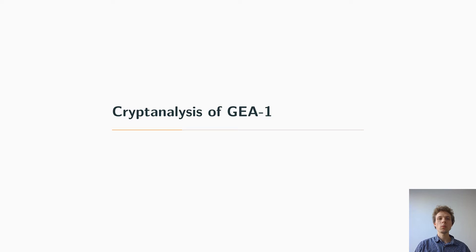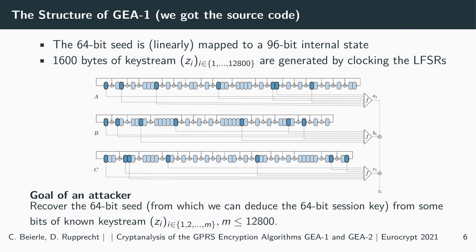Thank you very much, David, for the introduction. Now I will talk about the ciphers GEA1 and GEA2 in detail and present the attacks, starting with GEA1. We obtained the source code of GEA1. It is an LFSR-based stream cipher with a 64-bit session key. Together with the initialization vector, this is non-linearly mapped to a 64-bit seed. This 64-bit seed is then linearly mapped to a 96-bit internal state divided into three registers A, B, and C of lengths 31, 32, and 33 bits.